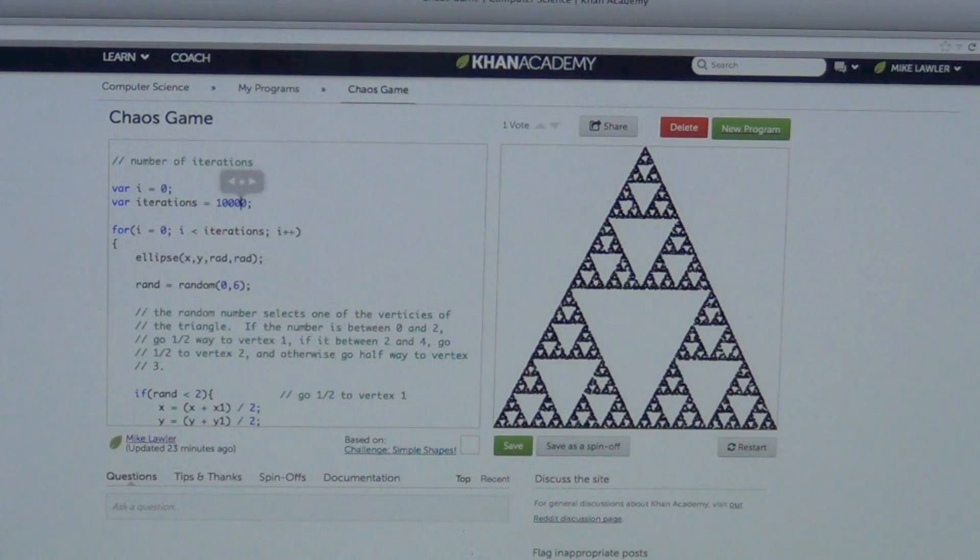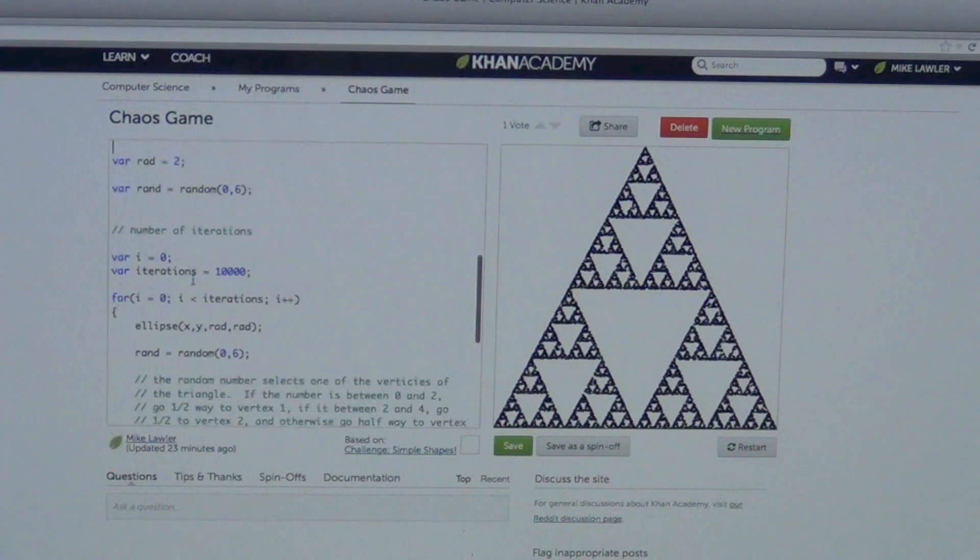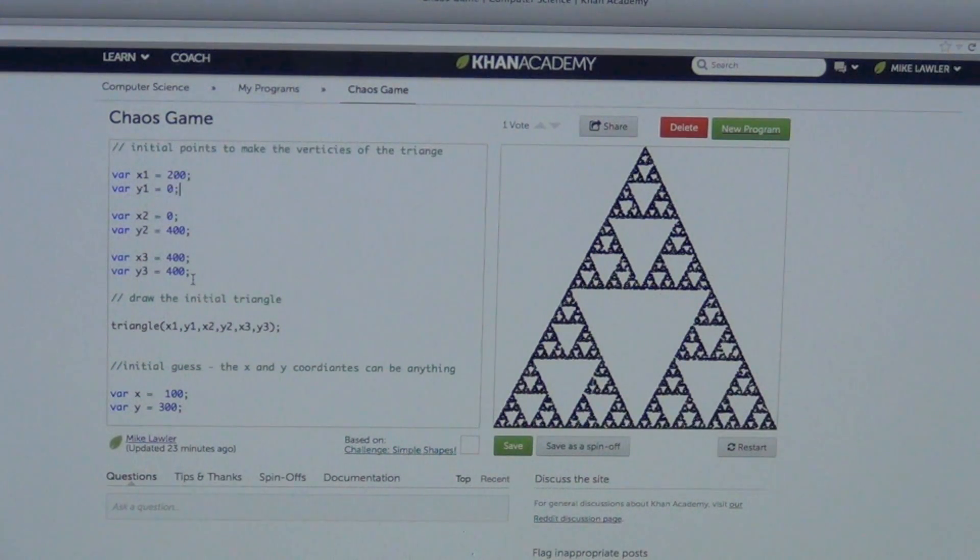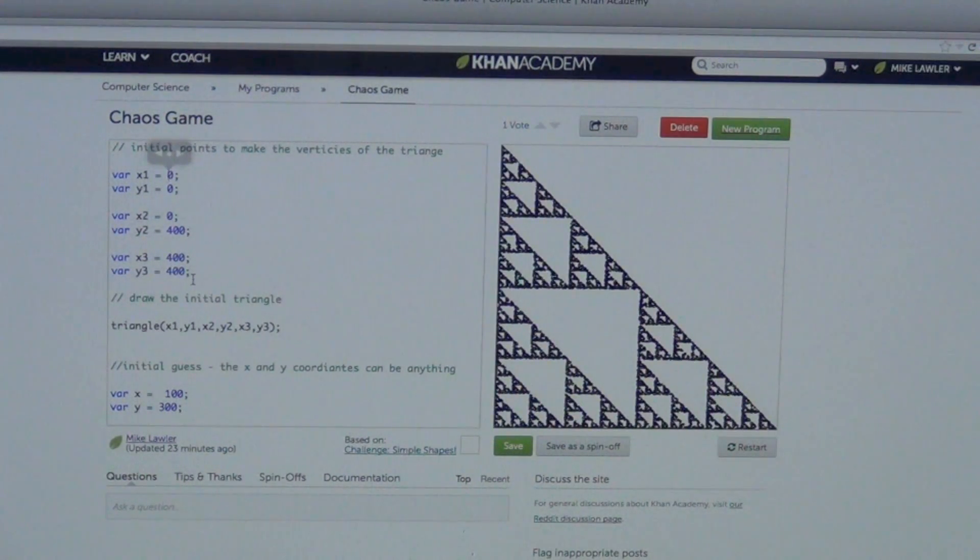Here now, but maybe we should change one of the starting vertexes. So let's make it a funny-shaped triangle. Maybe it will start at 0, 0. Oh, wait. You still get Serpinsky's triangle.